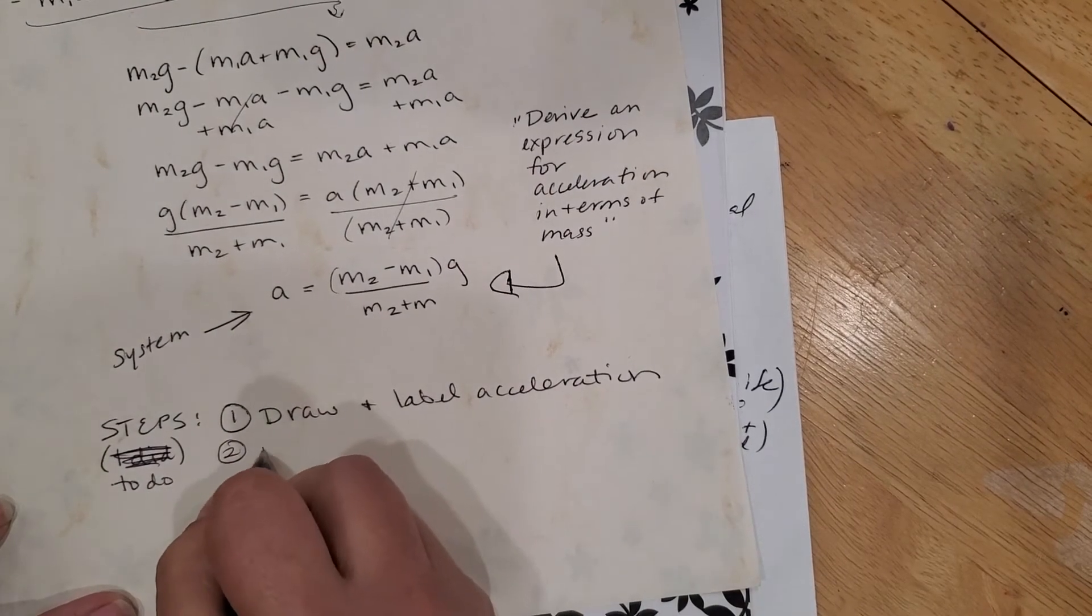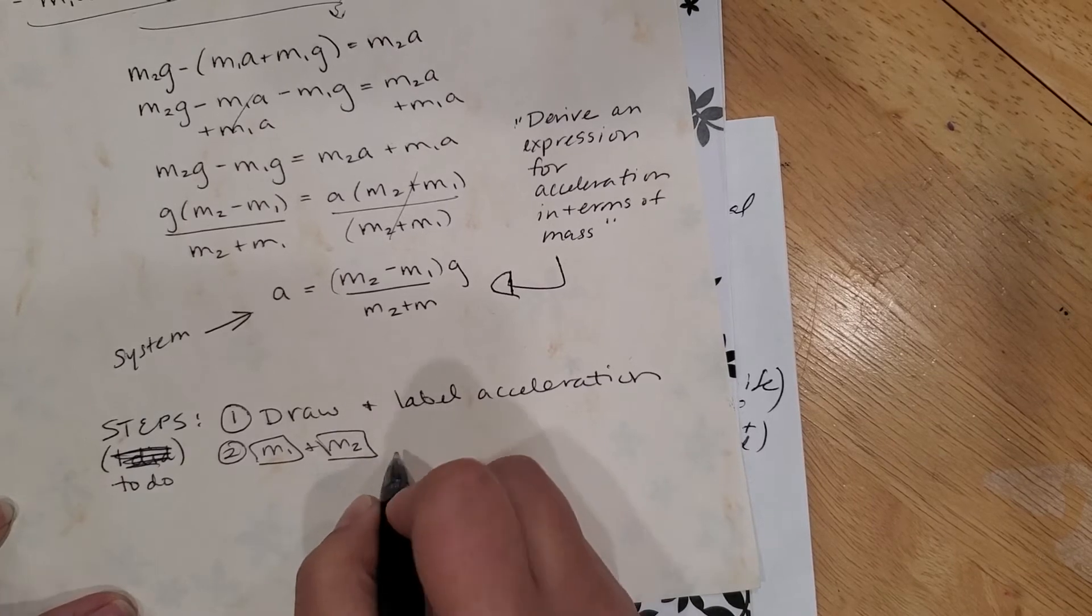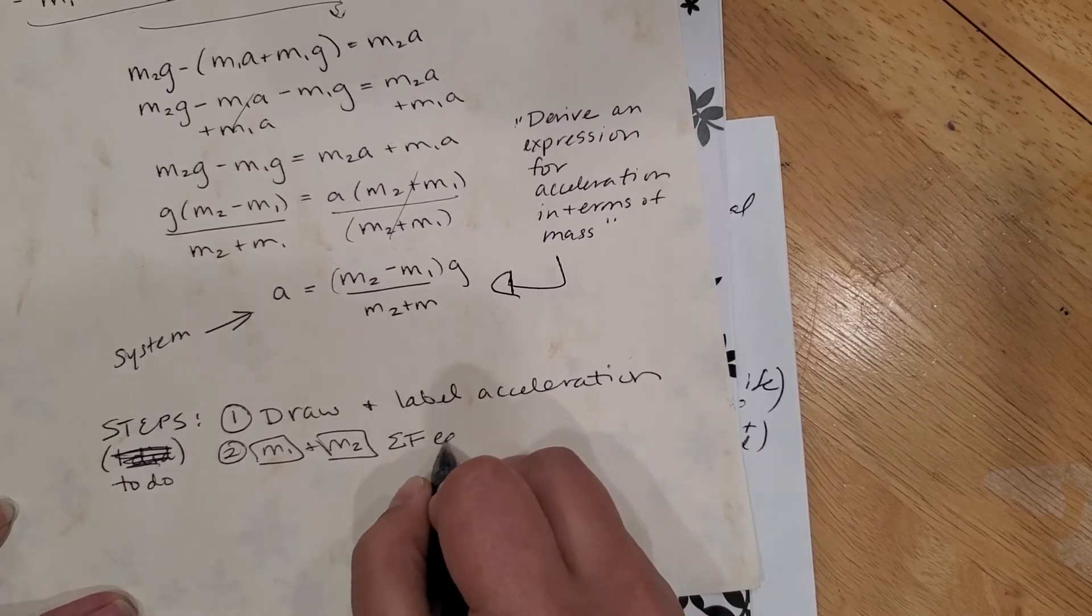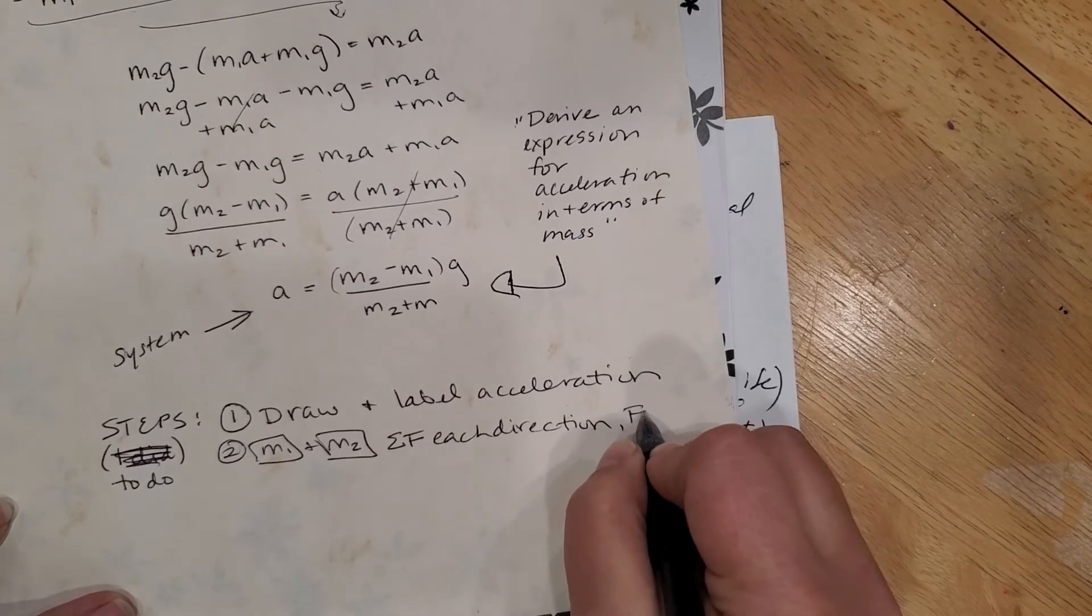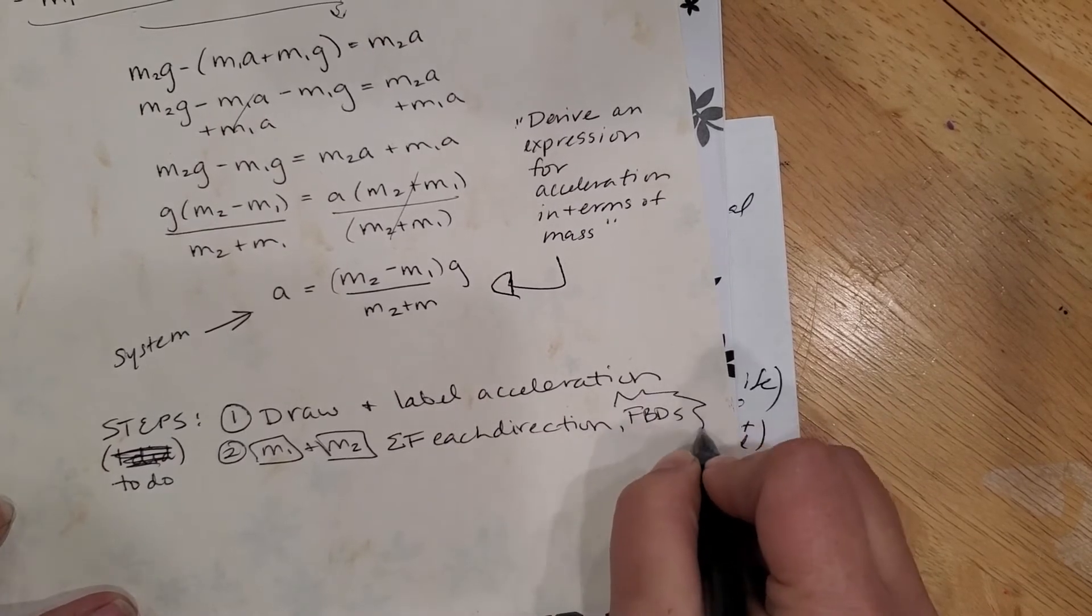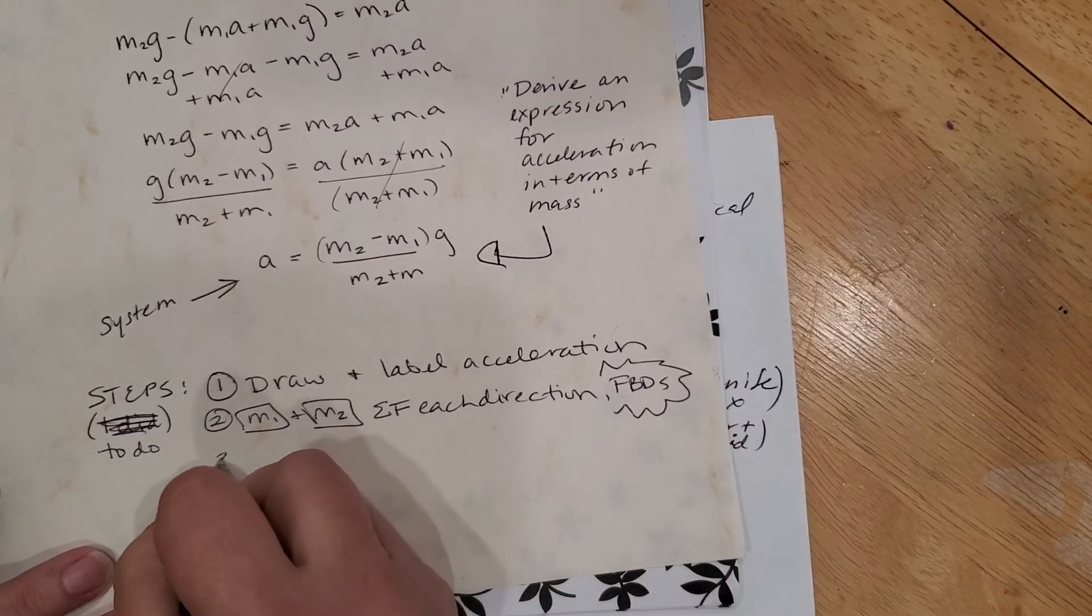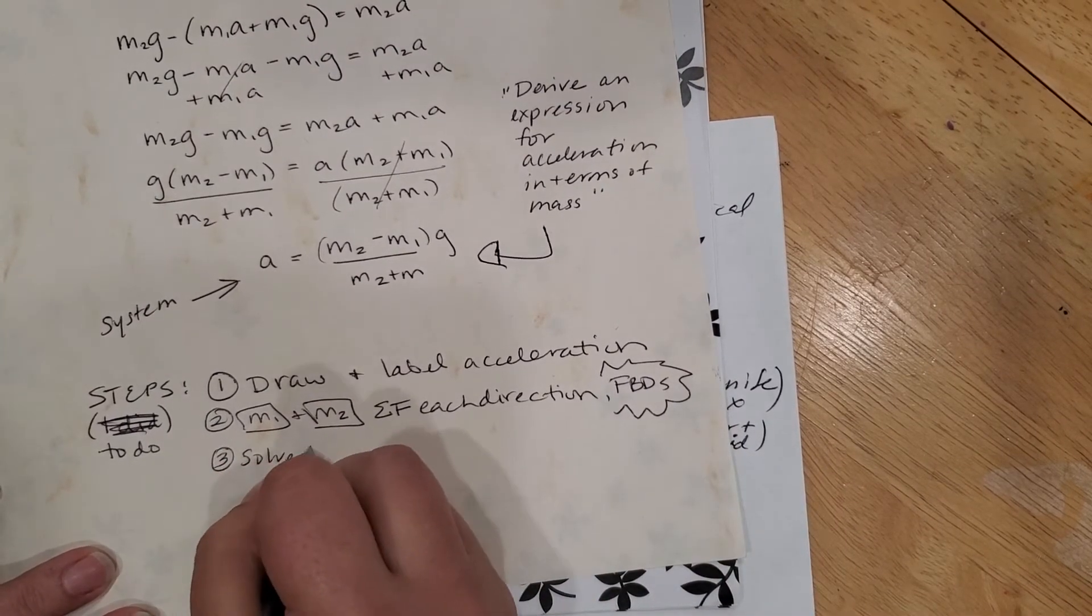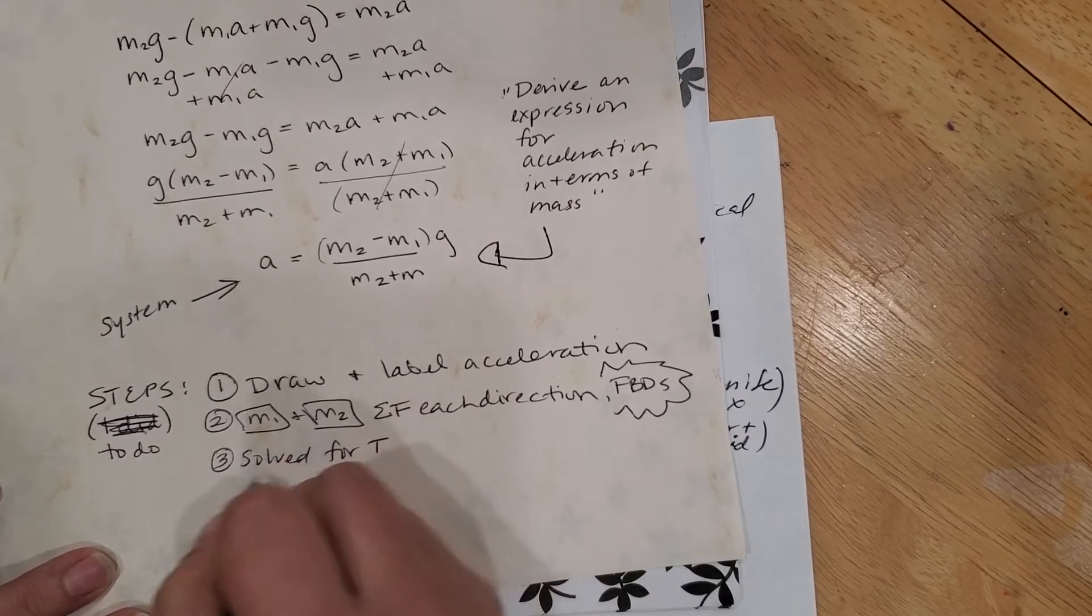Second thing I did was I made boxes for m1 and m2 to set up the sum of the forces in each direction and I drew free body diagrams right. Then I solved for t, oops solve, I'm trying to write it in the right tense, solve for t and plug in.